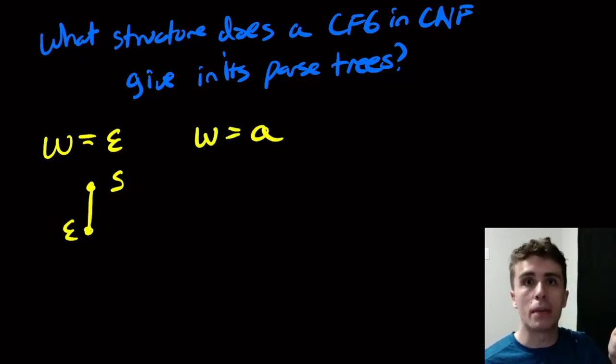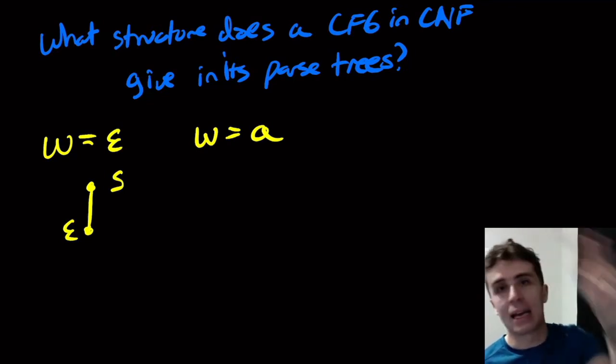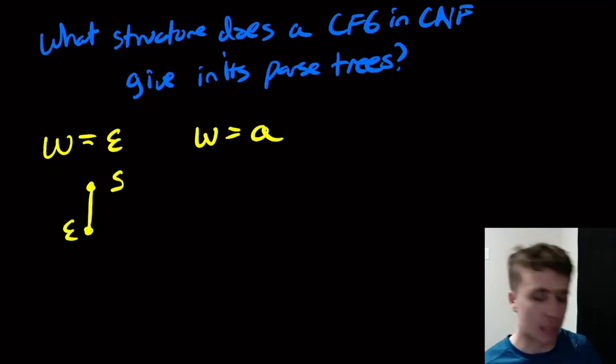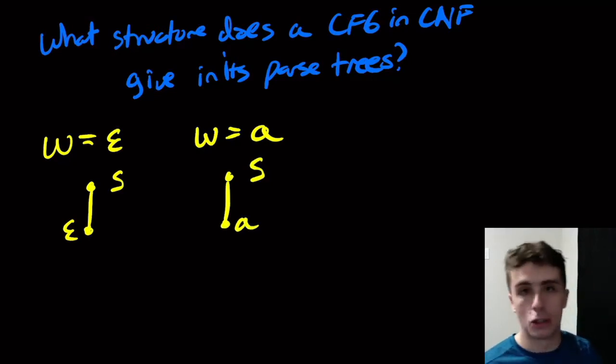If we have a single terminal, I can't produce two variables because those two variables, since they're not the start variable, have to make a non-empty string. And so the only possible parse tree in this case is s making a single terminal and nothing else.